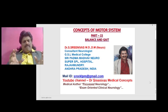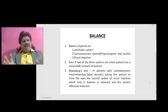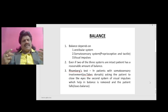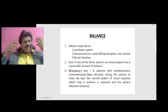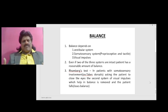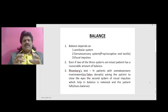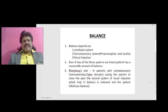Balance and gait — the concepts of motor system, part 15. Balance: how are we able to balance ourselves? What are the systems required for a proper good balance? Balance depends on three systems: one, the vestibular system; two, the somatosensory system, that is the proprioceptive and tactile; and third, visual impulses. If all three systems are working well and in unison, we have perfect balance.